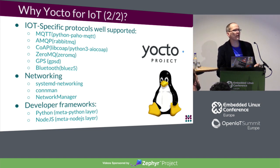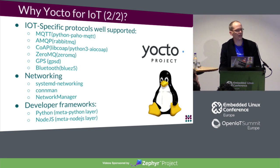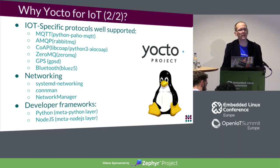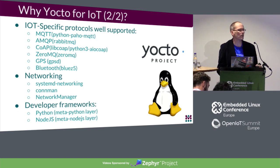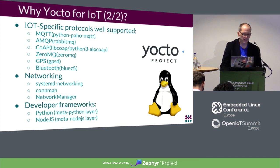For networking, there are quite a few choices for network management. Keeping track of Wi-Fi SSIDs and passwords can be tricky. systemd networking is a component of systemd that's fairly easy to use. If you want something more full-featured, there's ConnMan, which is used pretty extensively in the automotive space, and NetworkManager, which is part of my Ubuntu desktop. You can switch between one or the other depending on your specific needs.